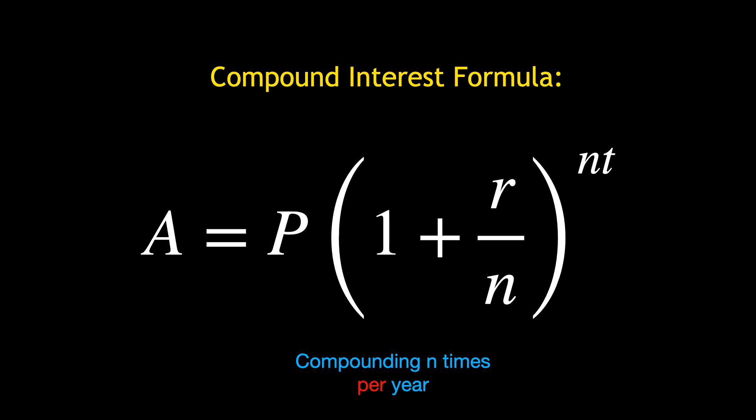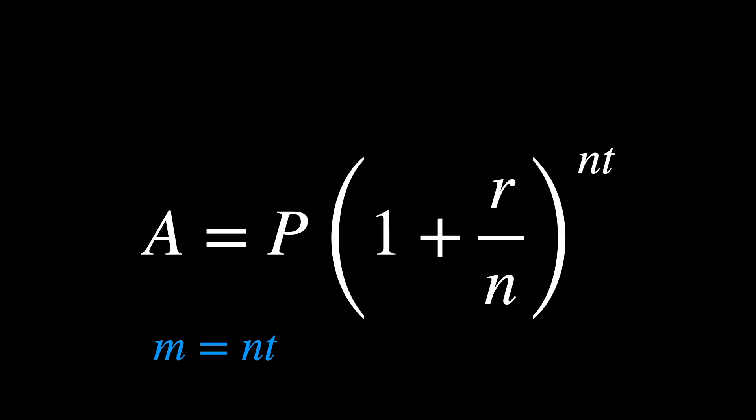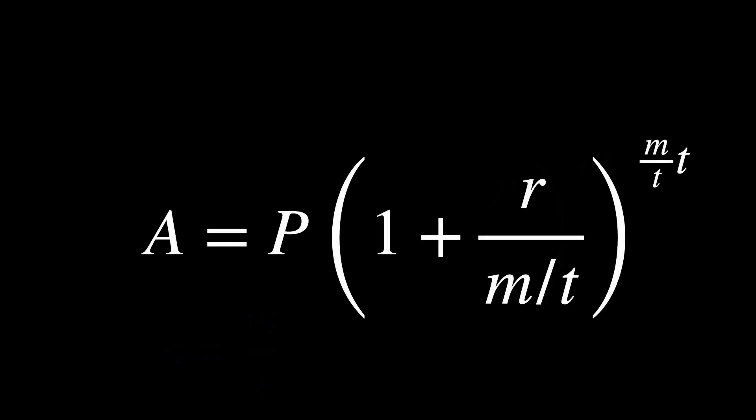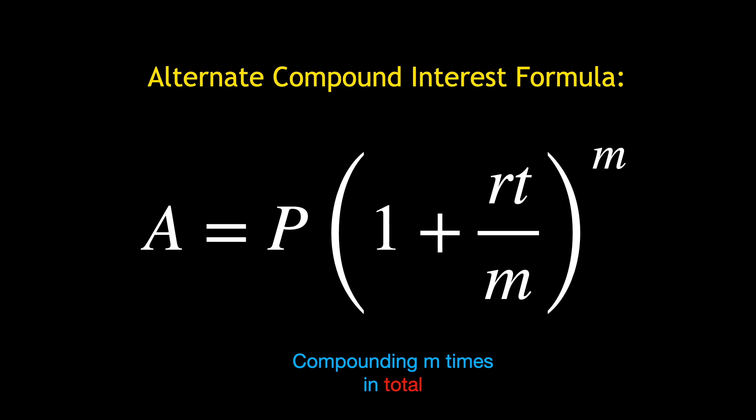To simplify things just a bit, let's rewrite this formula in terms of m, the total number of times that we compound. We do this by defining m equals n times t, or n equals m over t, and substituting. This gives us p times 1 plus rt over m raised to the m power.